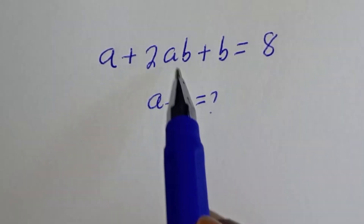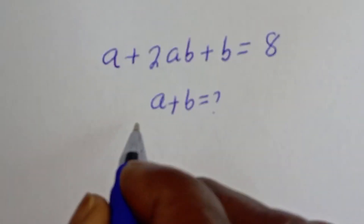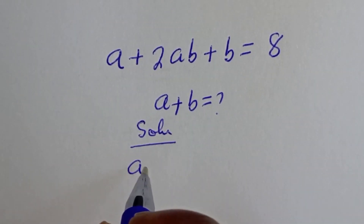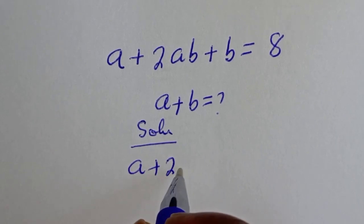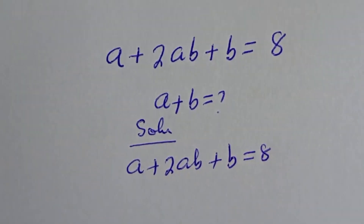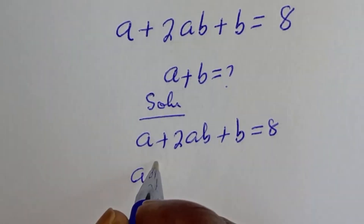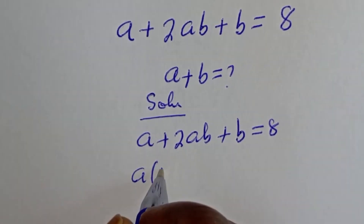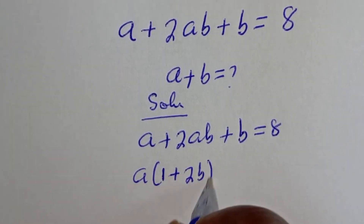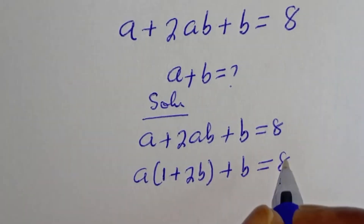How to solve for a plus b from this given math problem: a plus 2ab plus b is equal to 8. We have a plus 2ab plus b is equal to 8. If you look at these two, a is common — let's bring it out: a bracket, this divided by this, 1 plus 2b, plus b is equal to 8.